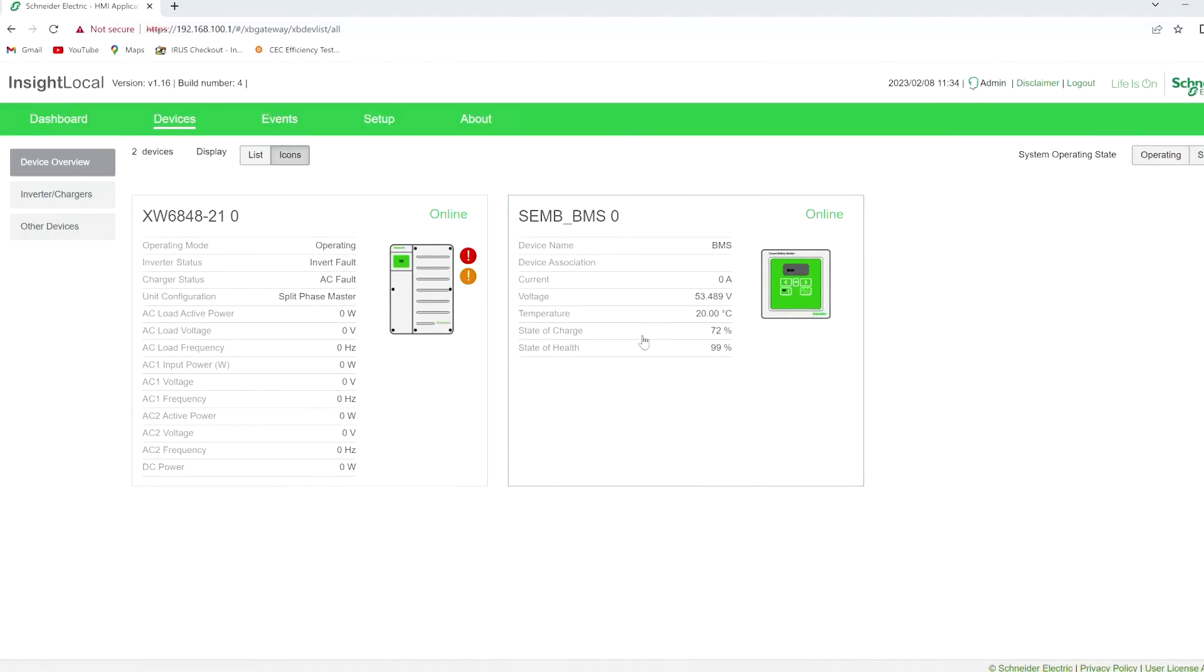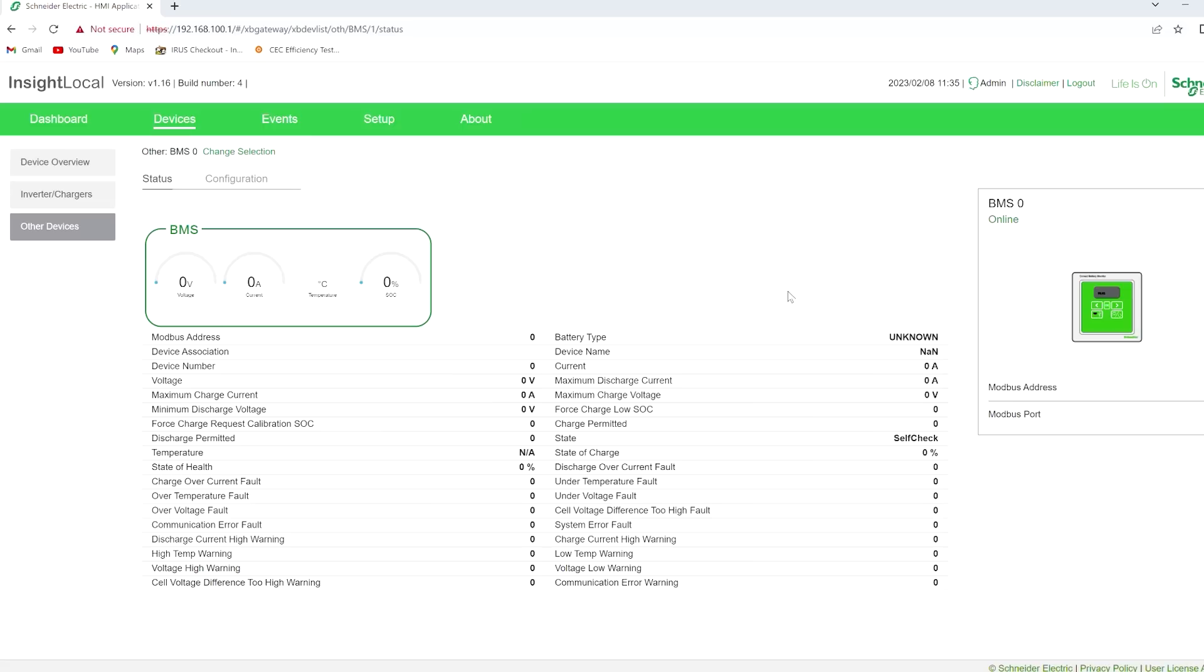It says state of charge control is 72 percent. State of health is 99 percent. That's excellent. All right. So if we click into this thing, what do we see? Very cool little graphics. We got 53.5 volts and 72 percent. Good.